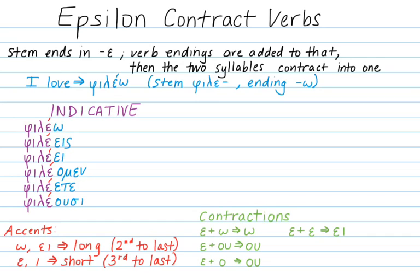If we combine an epsilon and another epsilon, it comes out as the digraph eta, spelled epsilon iota. And if you add an epsilon to epsilon iota, it also comes out as the digraph eta.